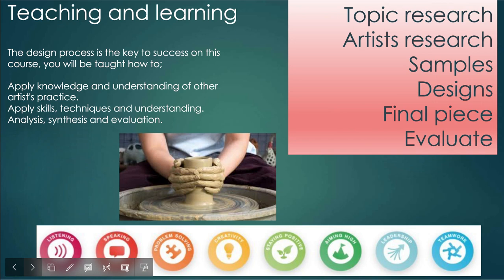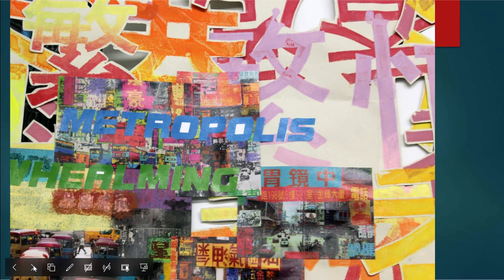There are loads of transferable skills you learn through art including speaking, listening, problem solving, creativity, staying positive, aiming high, being a good leader and working as a team. These are transferable to many different careers, not just art ones. You can see here this is a research board — the student made some stencils and screen printed as well as spray painted to display this sort of busy feel that she wanted to capture from cities. So when you say research, it's not really about making PowerPoints online.